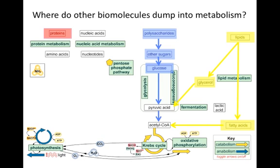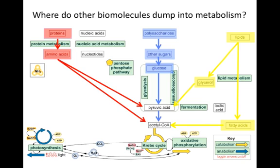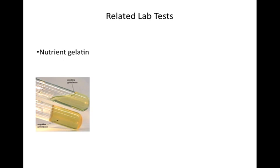Proteins get broken down into amino acids, which can enter the metabolic cycle in one of two places depending on their structure. The amino acids can enter where pyruvic acid enters, or where acetyl-CoA enters. We did complete some lab tests to determine whether or not an organism is capable of metabolizing proteins to use them as energy sources. The nutrient gelatin test allowed us to see if an organism produced gelatinase, an enzyme that breaks down the protein gelatin.